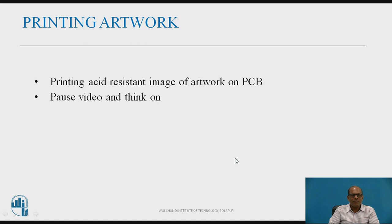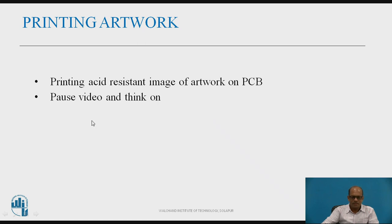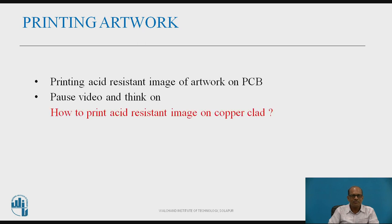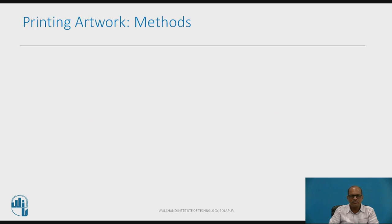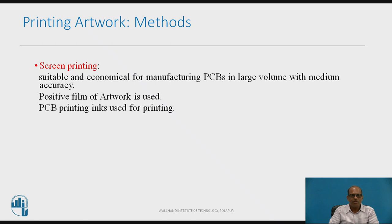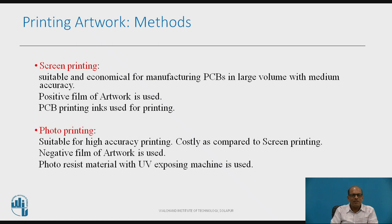Printing of the artwork on the copper clad involves printing an acid-resistant image of the artwork on the PCB, meaning whatever image is printed on the copper clad, that image is resistant to the etching chemicals. For printing an acid-resistant image on a copper clad, there are basically two techniques: first is screen printing and second is photo printing.